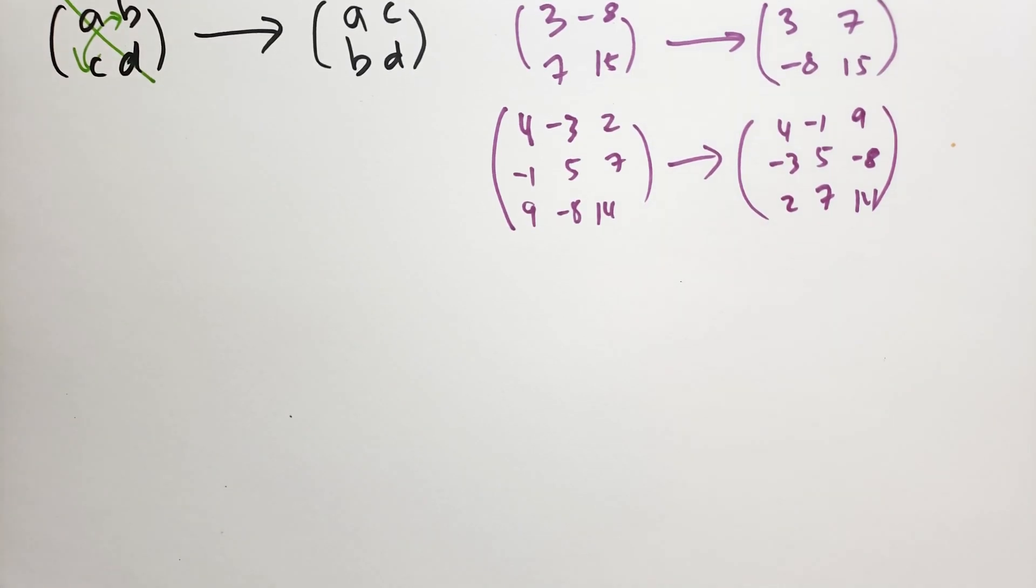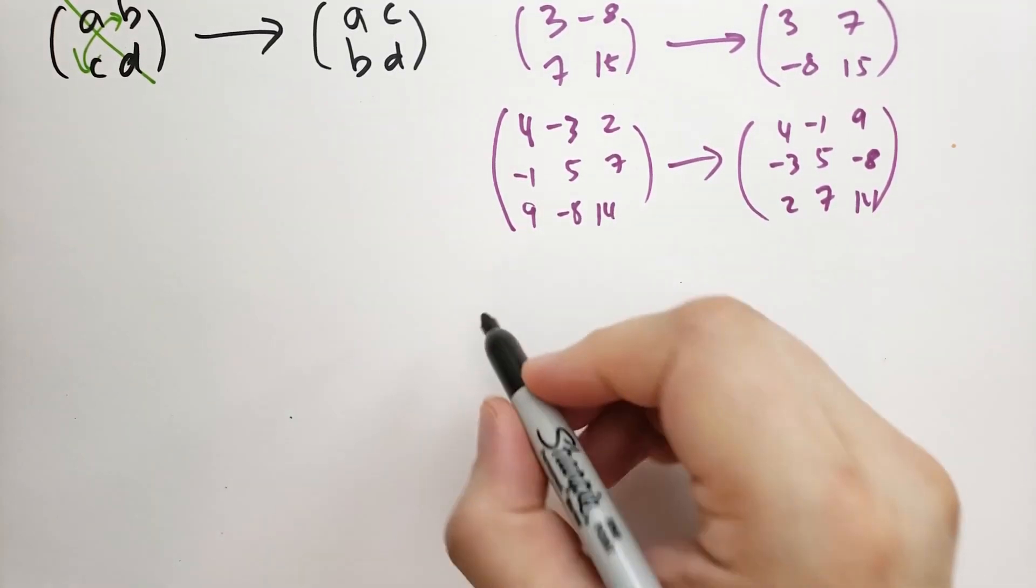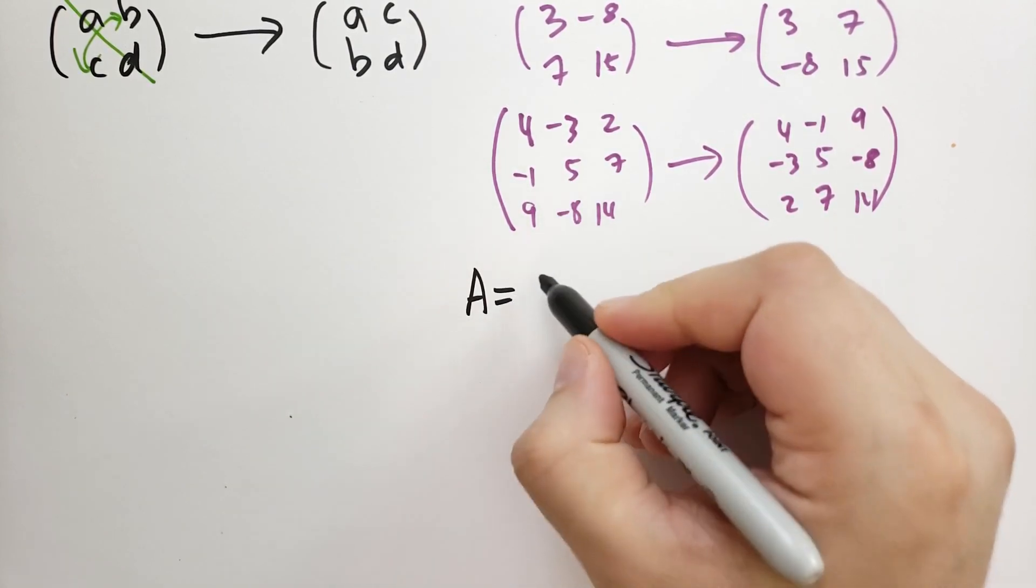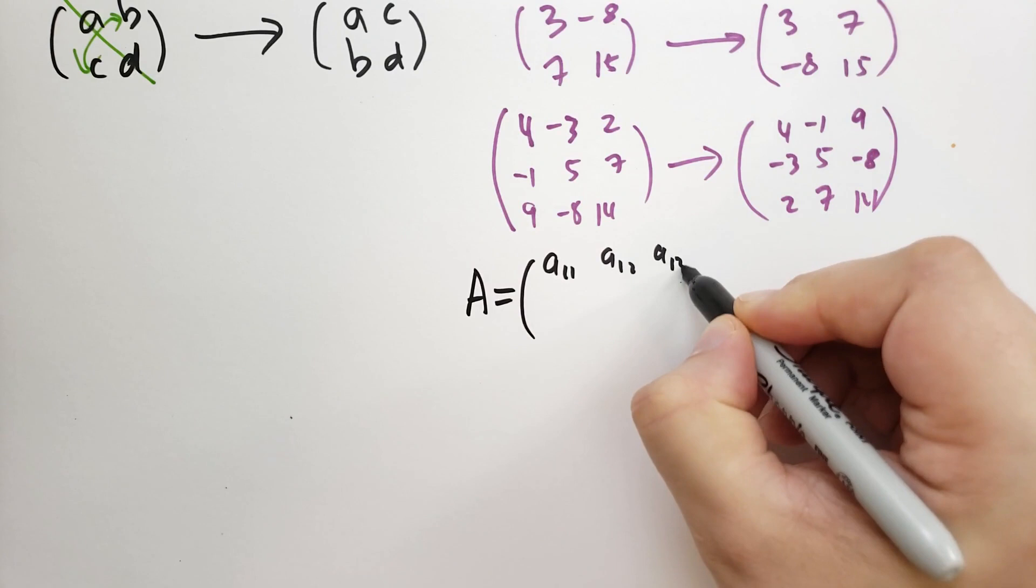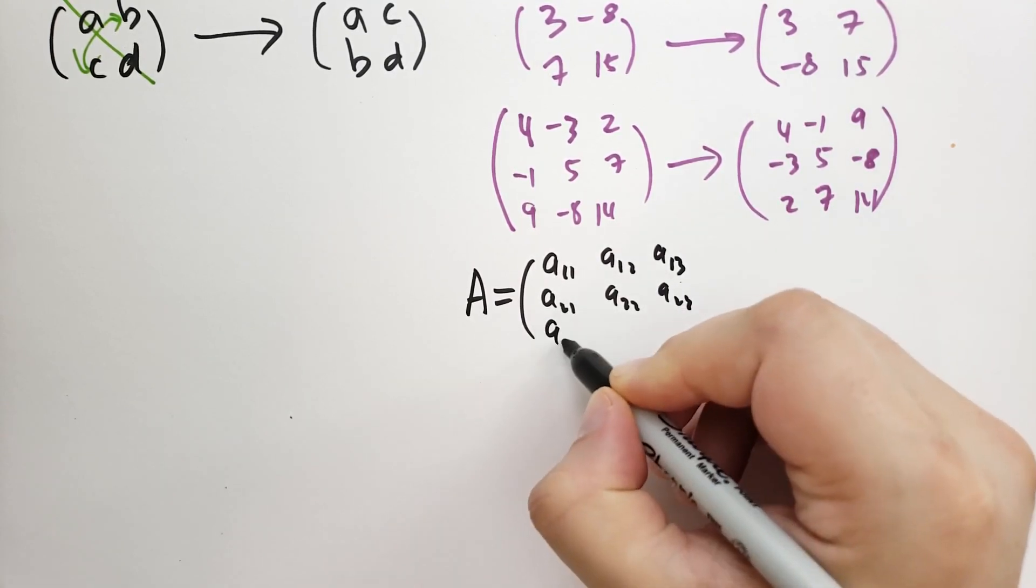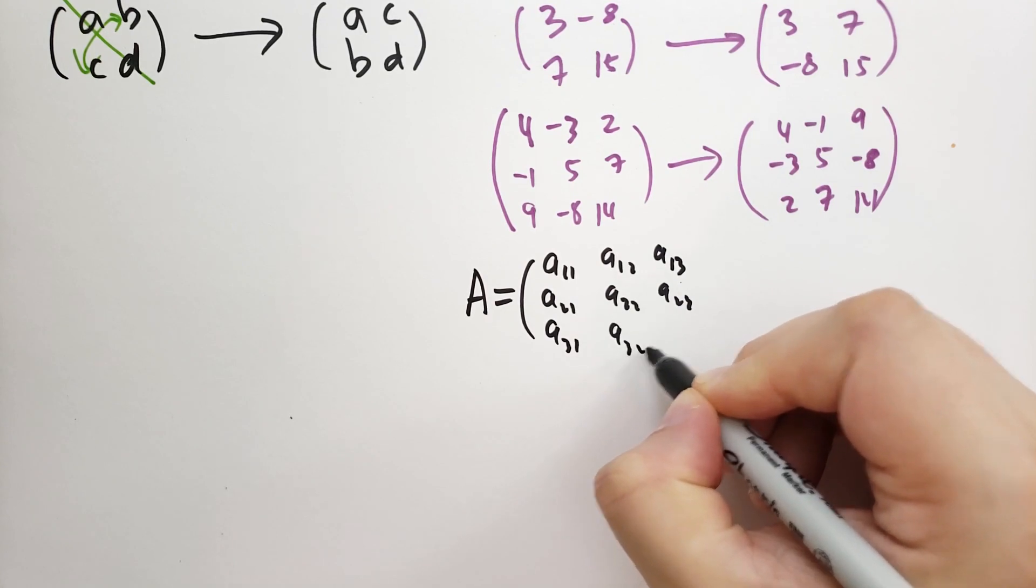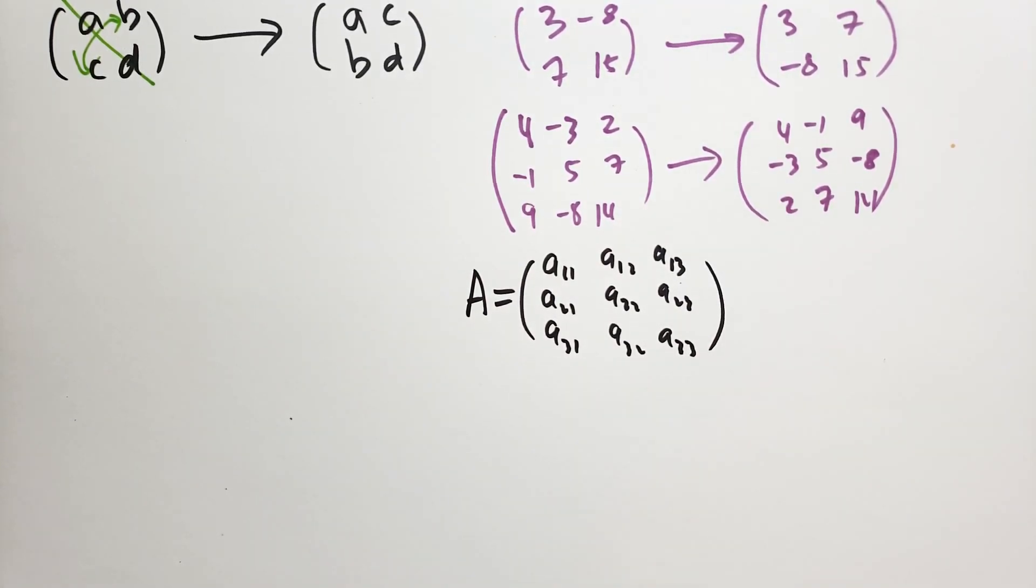We can write the transposition using the following notation. Suppose A is equal to the 3x3 matrix A11, A12, A13, A21, A22, A23, and A31, A32, and then A33. We will denote the transpose, we'll say T of A. Now the notation that I've seen is typically A superscript T like that.